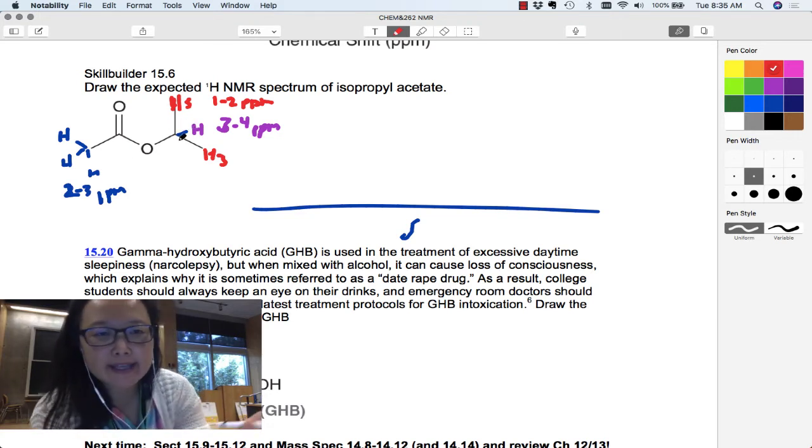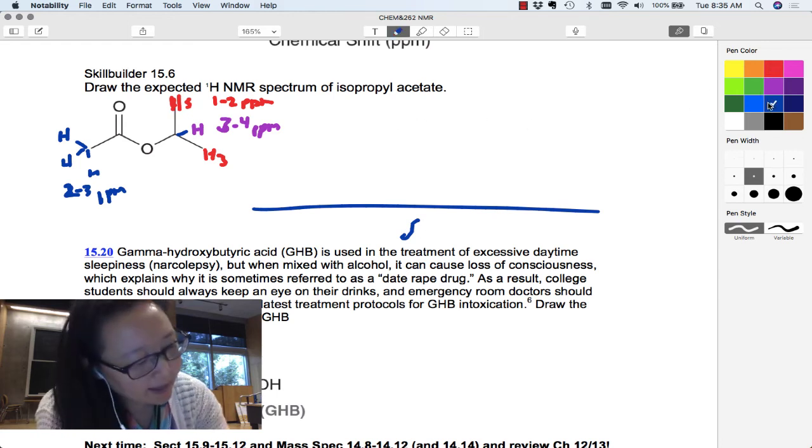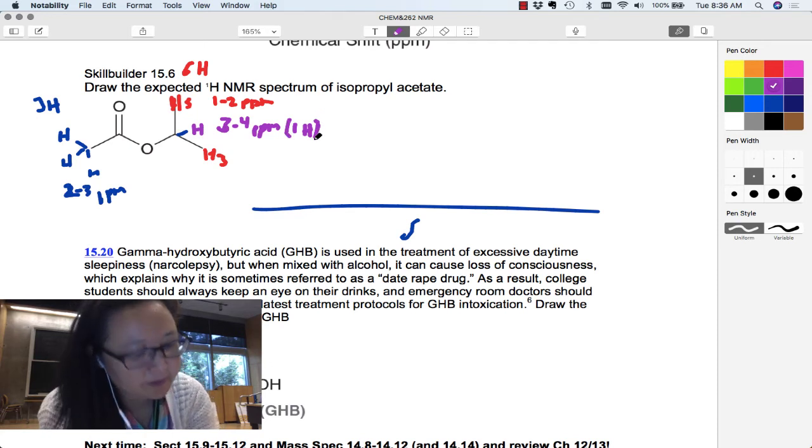Where do they appear on the axis or in the spectrum? And then the next thing we learned was about the integration. So I should see a 3H integration if it's provided. It's not always provided. I should see a 6H integration because of the two methyl groups.